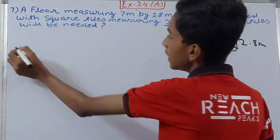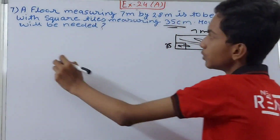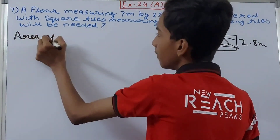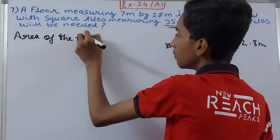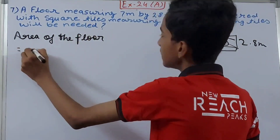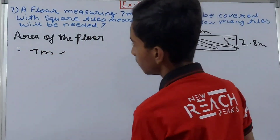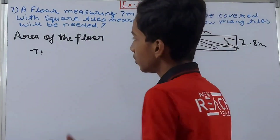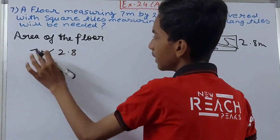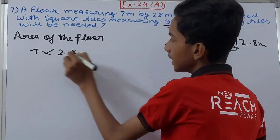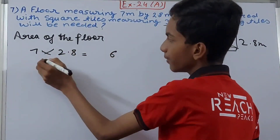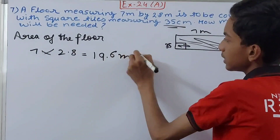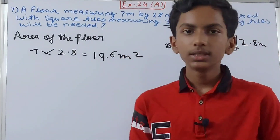First of all, we know the dimensions of the floor. So area of the floor equals 7 into 2.8. Let's remove units for now since we are doing calculations. Seven into 2.8: seven into eight is fifty-six, and five plus fourteen is nineteen point six. So the area of the floor is 19.6 square meters.